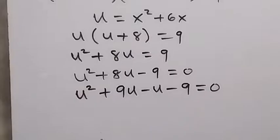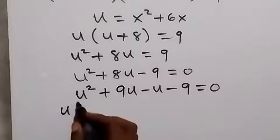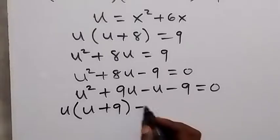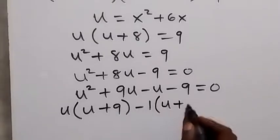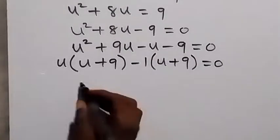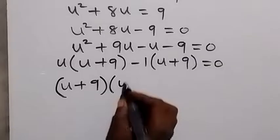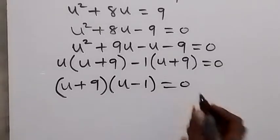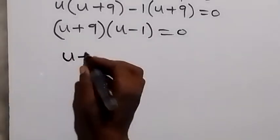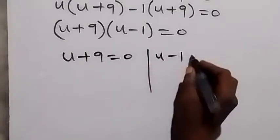We factor this as u squared plus 9u minus u minus 9 equals 0, because 9u minus u gives us 8u, and multiplying gives minus 9. From here we group and factor: u is common giving u(u plus 9), and minus 1 is common giving minus 1(u plus 9). So (u plus 9) is the common factor, giving (u plus 9)(u minus 1) equals 0. We have two cases.